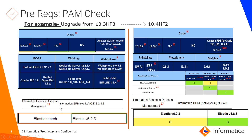If you have ActiveVOS, you need to ensure you are installing version 9.2.4.6. This will be provided as part of the shipping request you raise for the 10.4 binaries. Make sure you extract the ActiveVOS folder; during post-install it will ask whether you want to install ActiveVOS — say yes and provide the 9.2.4.6 installer folder. For Elasticsearch, it is optional. We support version 6.2.3 and additionally 6.8.6, so you can stay on 6.2.3 or move to 6.8.6.